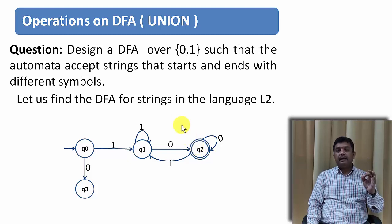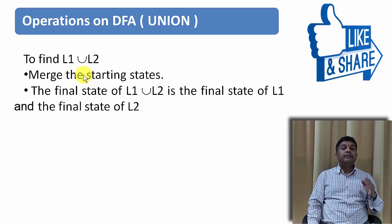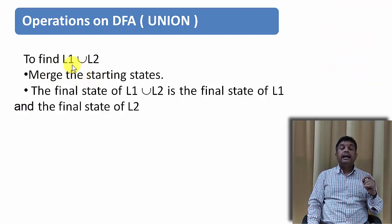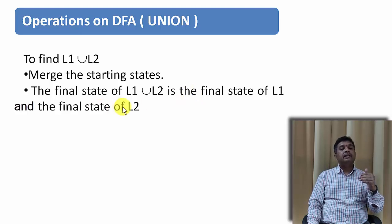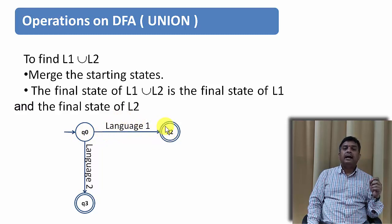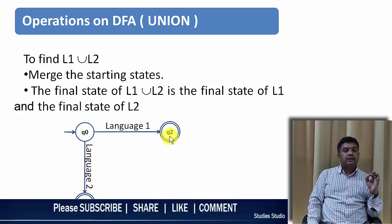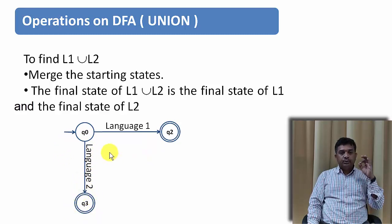Now the main thing is how to perform the union operation. To perform union we follow two steps. If L1 and L2 are two DFAs, then to find L1 union L2 we merge the starting states of both DFAs. The final states of L1 union L2 are the final states of L1 as well as the final states of L2. So if the starting states are merged, L1 goes in one direction with final state Q2, and L2 goes in another direction with final state Q3.